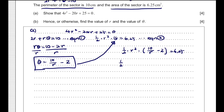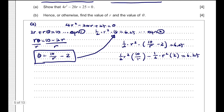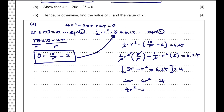Expanding: 1 over 2 times R squared times 10 over R minus 1 over 2 times R squared times 2 equals 6.25. Simplifying, we get 5R minus R squared equals 6.25. Multiplying through and rearranging, we have shown that 4R squared minus 20R plus 25 equals 0. QED.